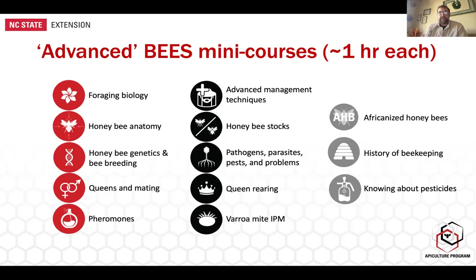The other courses are on the advanced track. Most of the advanced mini courses are roughly an hour each, and they can all be taken à la carte. Individuals can come in and sign up for whichever ones they want — there are no prerequisites. You don't have to take one before another; it's completely à la carte so beekeepers or interested individuals can take whatever courses they choose.